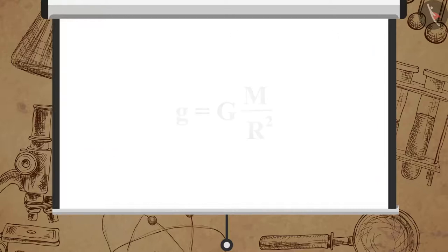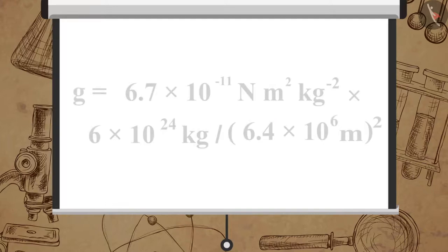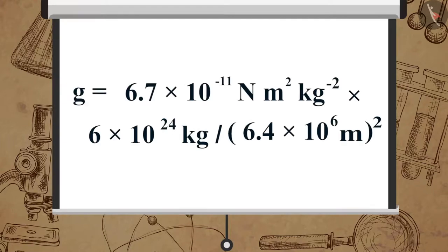We know g is equal to G multiplied by M upon R square. So g equals 6.7 multiplied by 10 raised to minus 11 Newton meter square per kilogram square multiplied by 6 multiplied by 10 raised to 24 kilograms per 6.4 multiplied by 10 raised to 6 meters the whole square.